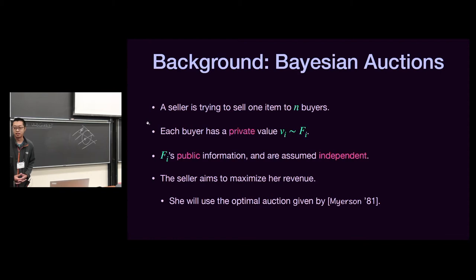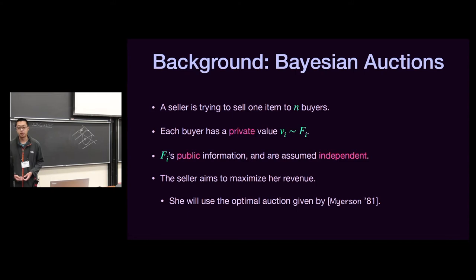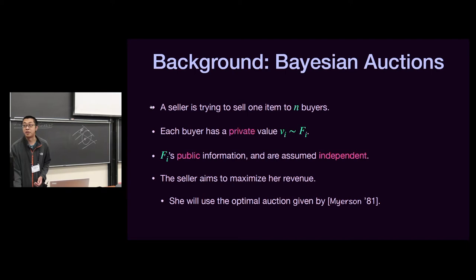We will be working on this classical Bayesian auction setting, where we have a seller who is trying to sell one item to buyers. Each buyer has a private valuation V_i drawn from a distribution F_i. We assume these distributions are public information and independent. The seller's goal is to maximize her revenue, so she will use the optimal auction, characterized by the seminal work of Myerson.